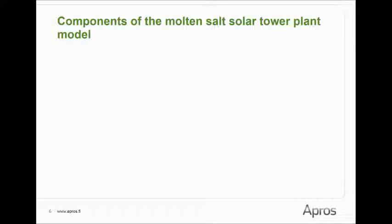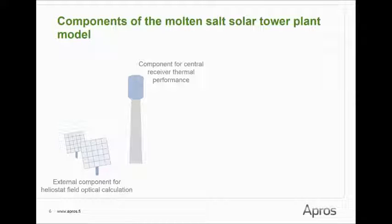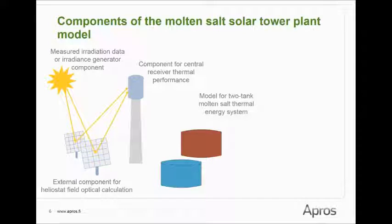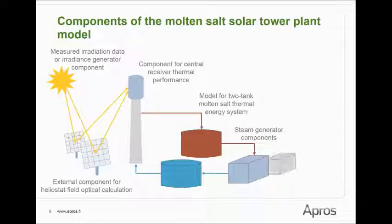This figure shows the main components within the model. A component for heliostat field optical calculation, a component for the thermal performance of the central receiver, measured irradiation data or irradiance generator component, a model for the two-tank molten salt thermal energy storage system, steam generator components, and power block and generator components.